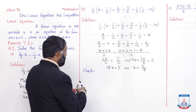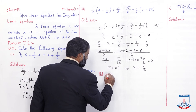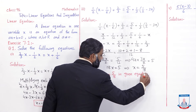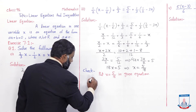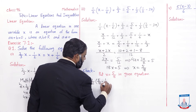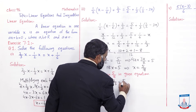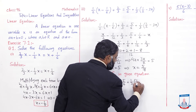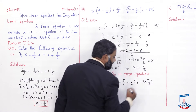Put x is equal to 5 over 18 in given equation. Given equation hai hamare paas: 1/2 into (x minus 1/6). x ki jagah 5/18 aa jayega: minus 1/6 plus 2/3 is equal to 5/6 plus 1/3 into (1/2 minus 3x). x ki jagah phir 5/18 aa jayega, multiply ho raha hai iske saath.